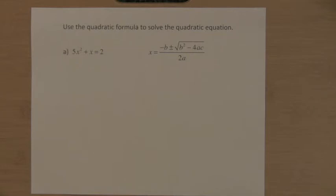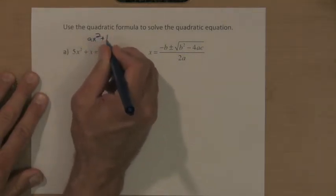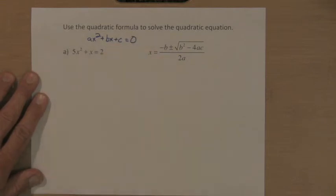All right, I'm assuming you finished this problem. One thing I noticed is that before we can identify the values of a, b, and c, it is not in this form. The equation does not say it equals zero, so I've got to rewrite it and make it equal zero.